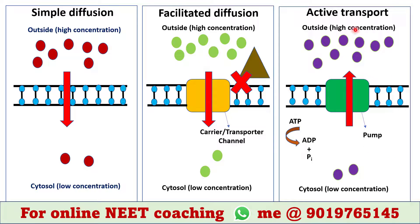In active transport, molecules move against the concentration gradient — that means from a lower concentration to a higher concentration. In this picture we can see this molecule has lower concentration in the cytosol and higher concentration in the extracellular space, so this molecule will move from inside to outside. Like facilitated diffusion, this process also requires assistance from a membrane-embedded protein.